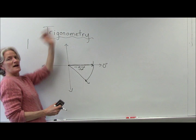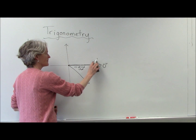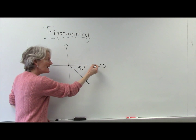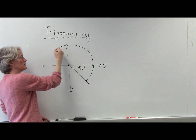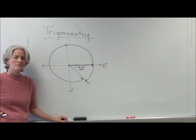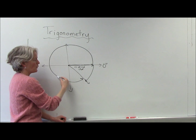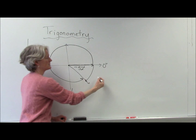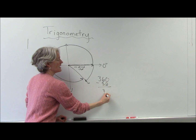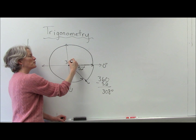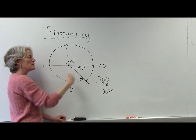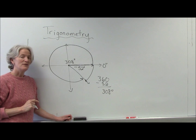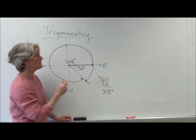So counterclockwise is positive, clockwise is negative. But you can end up in that same spot — if you went 300 and something degrees the other way. Couldn't I rotate all the way around and end at that same place? If that's the case, how many degrees did I go? I didn't go 360 — I went 52 shy of 360, which is 308 degrees. So a rotation of 308 degrees in the positive direction ends me at the same place as a rotation of negative 52 degrees. Those angles have a special relationship — they are called coterminal angles.